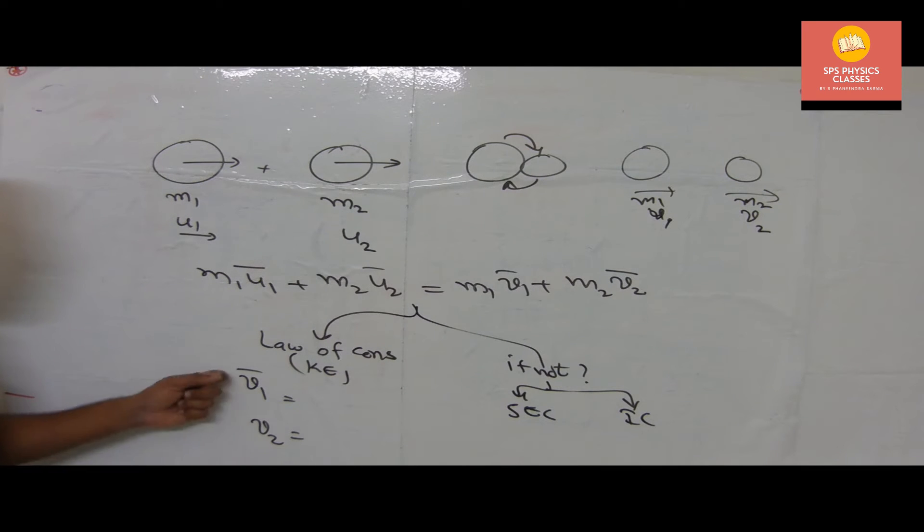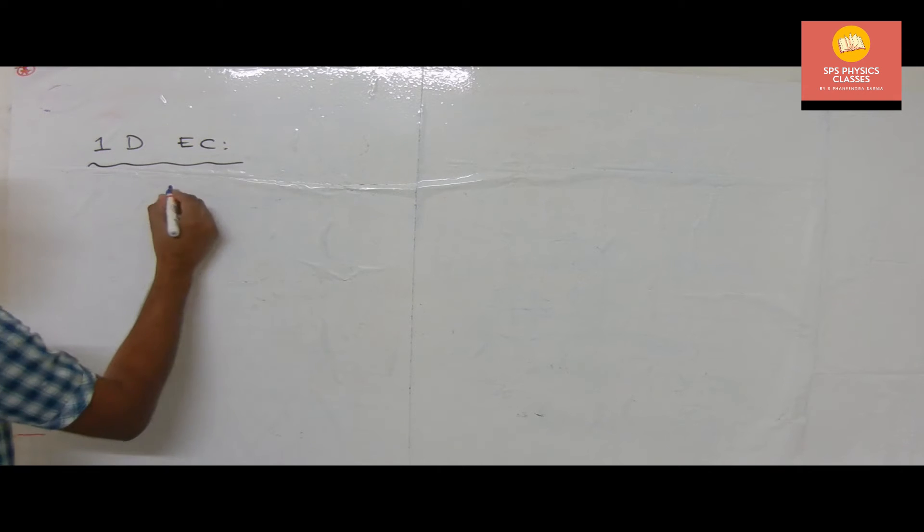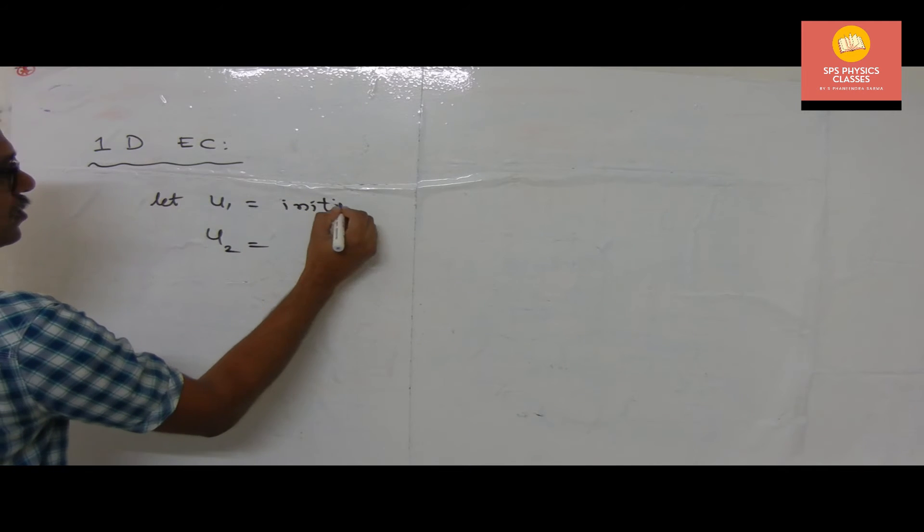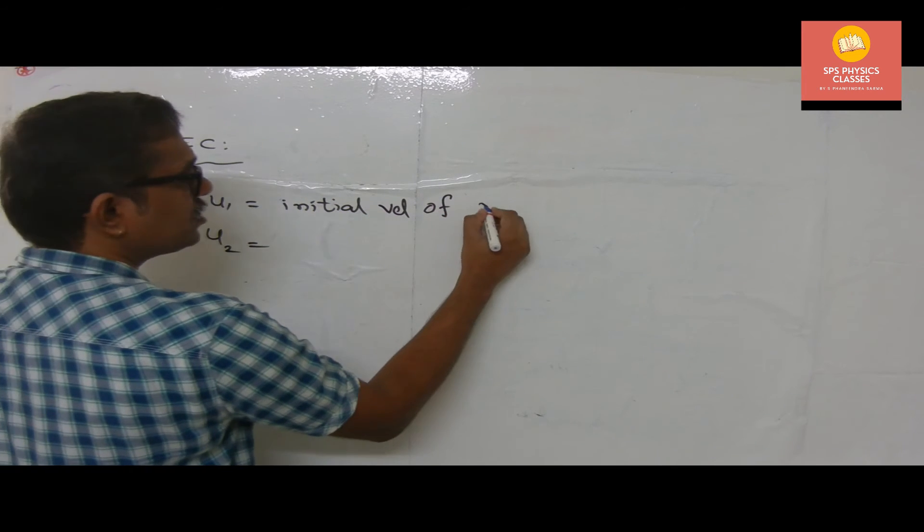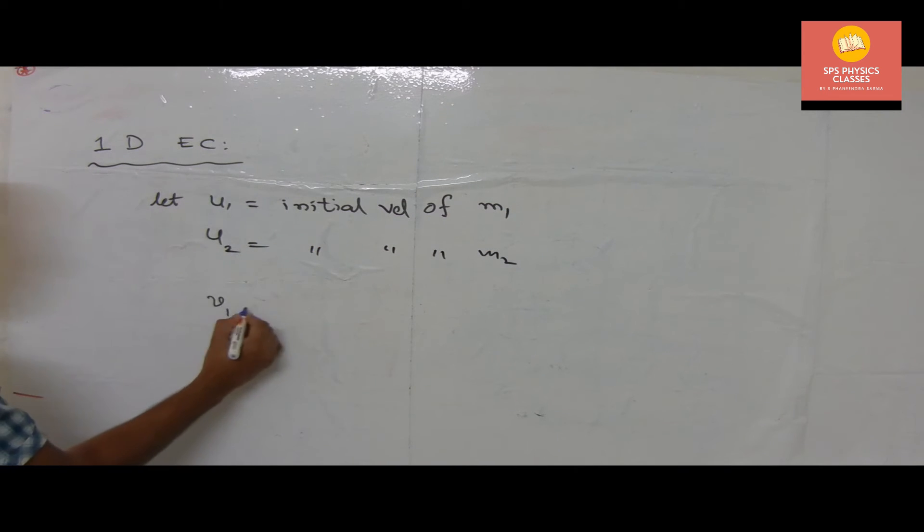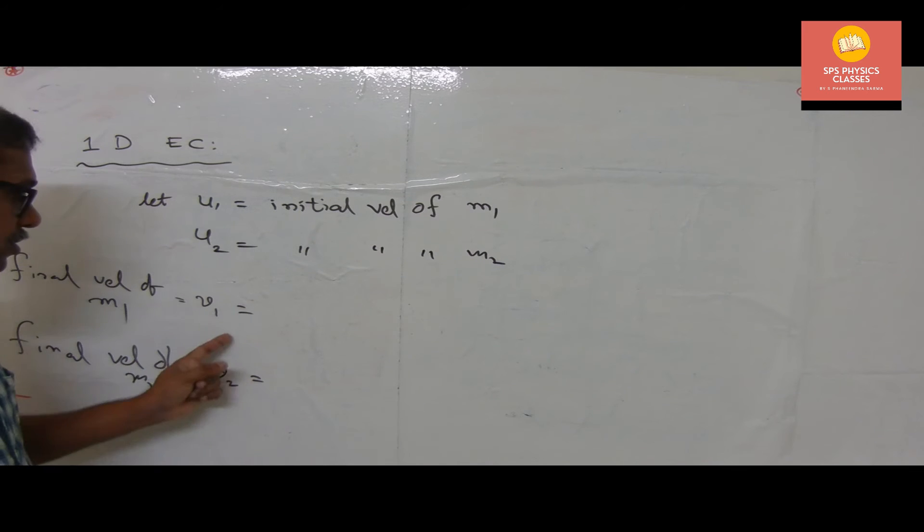Now today let us try to explore for velocities, how to remember these velocity equations v1 and v2 shortly in the entrance. One dimension elastic collision: let u1 and u2 are initial velocity of m1 and initial velocity of m2. Then I would like to find out what are the final velocities. So v1 and v2 are nothing but final velocity of m1 and final velocity of m2. Now my aim is to find out v1 and v2.